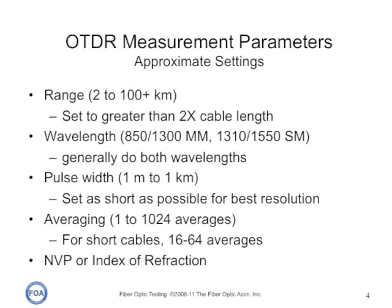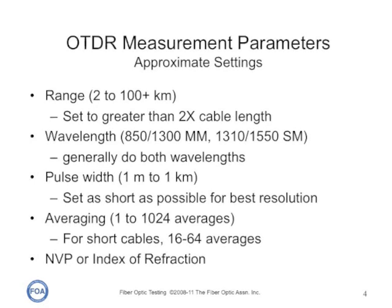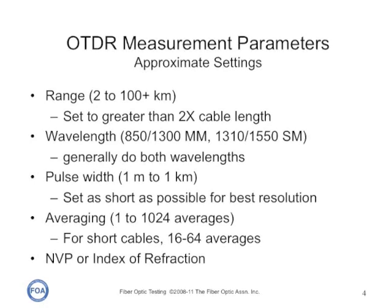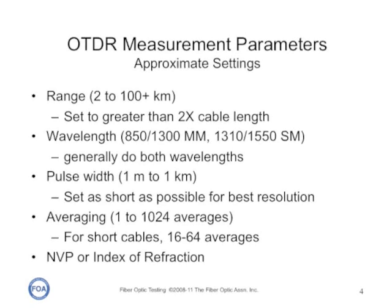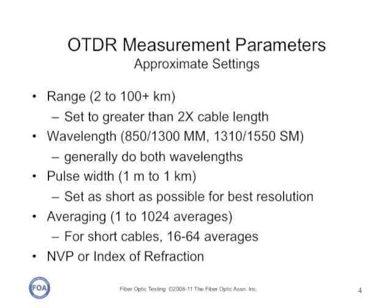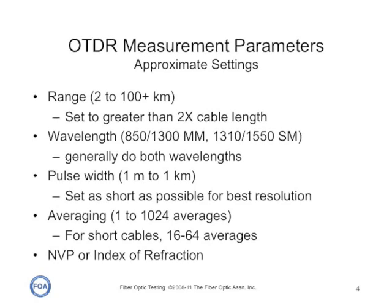In order to get good data from an OTDR, you need to set a number of measurement parameters: the range, which should be set to twice the cable length; the wavelength, to match the wavelength of the system you're testing; the pulse width, which determines how far the OTDR can see and how well it can resolve closer events; the number of times you average the signal, which reduces the noise; and the NVP, nominal velocity of propagation, or index of refraction, which is the calibration for the distance measurement on the OTDR. Let's look at all of these in detail.